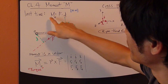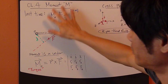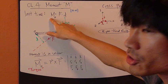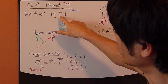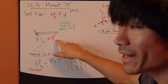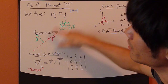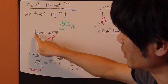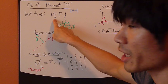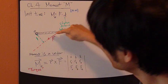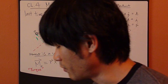So moment in the scalar basis, the magnitude of the moment is equal to force. The magnitude of the force times D. D is the shortest distance between the point O, where you take moment about, and the line of action of force.